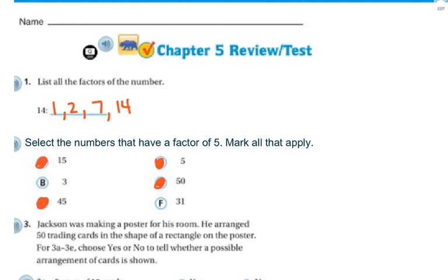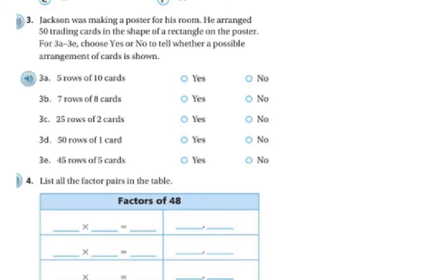Next it says Jackson was making a poster for his room. He arranged 50 trading cards in the shape of a rectangle on the poster. For 3A through 3C, choose yes or no to tell whether a possible arrangement of cards is shown. I think about my multiplication facts and factors. 5 rows of 10 cards, 5 times 10 is 50, so yes.